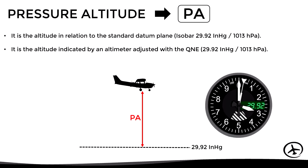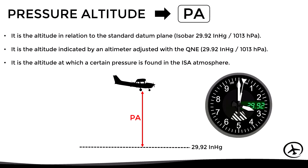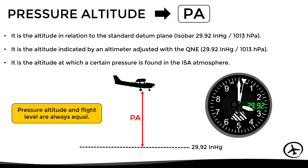Considering that in the ISA model the pressure at each level has a fixed value, we can also say that the pressure altitude is the altitude in the ISA atmosphere where a certain pressure is found. Another thing to keep in mind is that the definition of pressure altitude is exactly the same as the definition of flight level, therefore the pressure altitude will always be equal to the corresponding flight level.